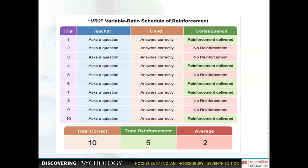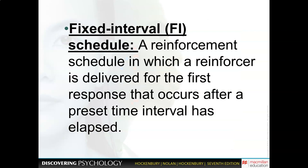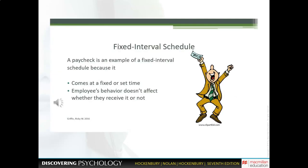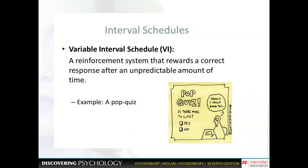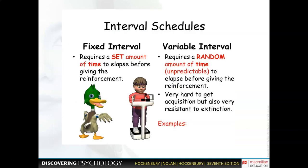Fixed interval schedule is when a reinforcer is delivered for the first response after a preset time interval has elapsed — a good example is paychecks, such as receiving pay every two weeks. Variable interval schedule means the interval is not set at a specific time but is more unpredictable — a good example is a pop quiz.